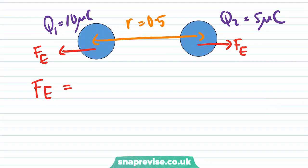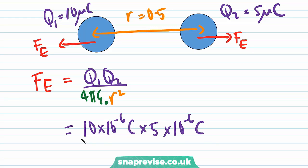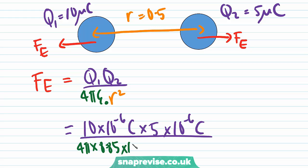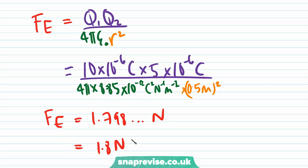We use Coulomb's law to find this electrostatic force by substituting in the given values. We have Fe equal to 10 times 10 to the minus 6 coulombs times 5 times 10 to the minus 6 coulombs, divided by 4π times epsilon 0 (which is 8.85 times 10 to the minus 12 coulombs squared per newton per metre squared), multiplied by 0.5 metres all squared. Carrying out this calculation gives a value for Fe of 1.798 newtons, which is 1.8 newtons to two significant figures.